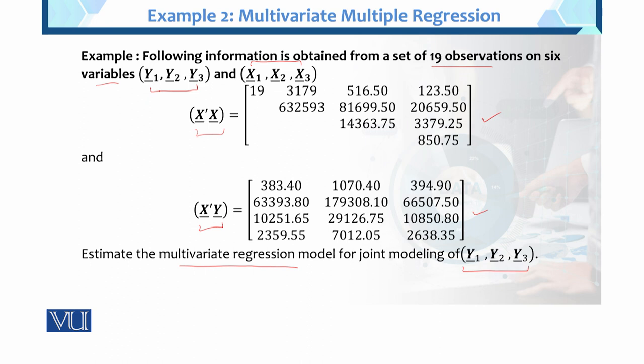What do we need to find? Estimate the multivariate regression model for joint modeling of Y₁, Y₂, Y₃. We need to estimate using multivariate regression, which will give us the joint modeling of Y₁, Y₂, Y₃ simultaneously. This is the example of multivariate multiple regression when we have computations or results given that we need to use to estimate the regression model.